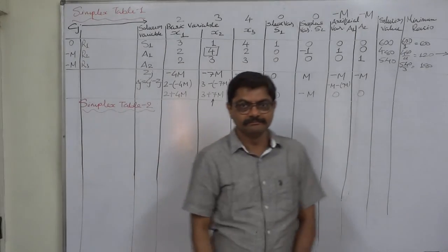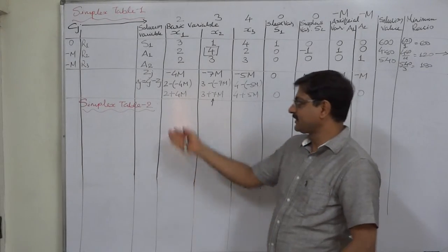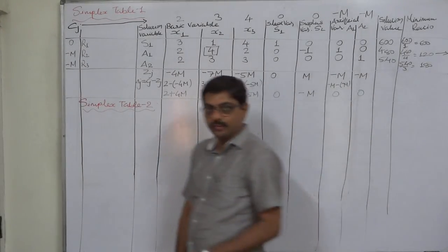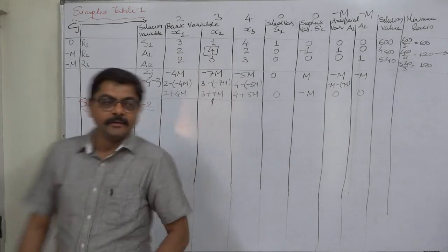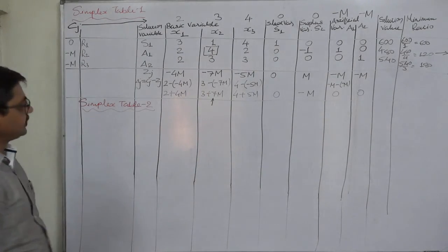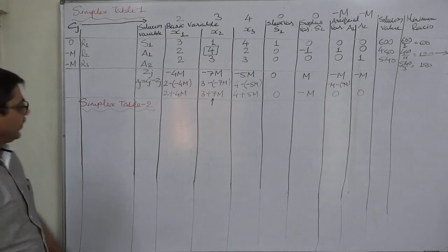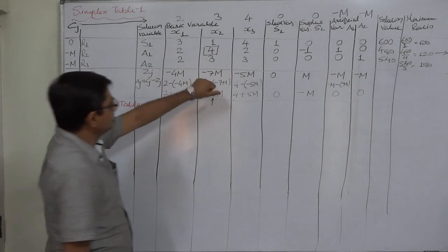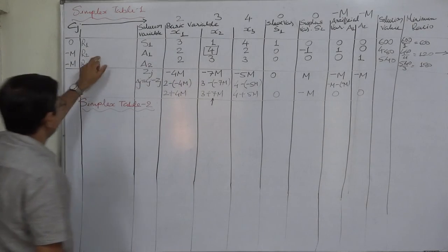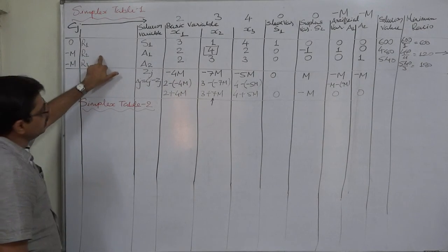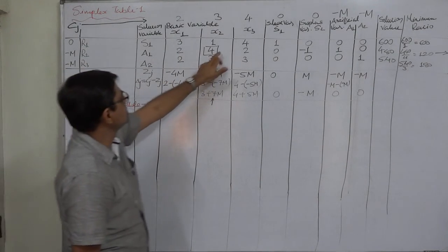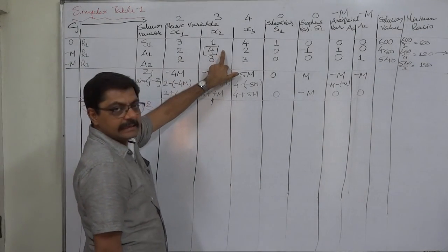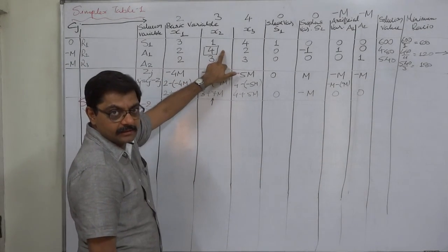Hello and welcome. Let us prepare simplex table 2. We have already prepared simplex table 1 and we have selected x2 as key column, r2 as key row, and 4 as key element.